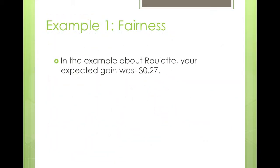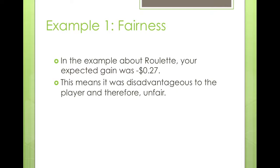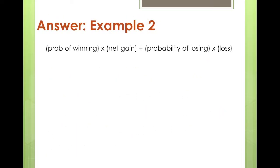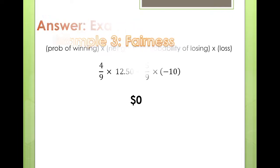The roulette example gave an expected gain of negative $0.27, which means it was disadvantageous to the player and therefore unfair. Another example: a game where you randomly draw a marble from a set of five red and four blue marbles. If a blue marble is drawn, the participant wins $12.50 on top of their initial bet; if red is drawn, the initial $10 bet is lost. Calculating: (4/9 × $12.50) + (5/9 × −$10) = $0, so the game is fair.